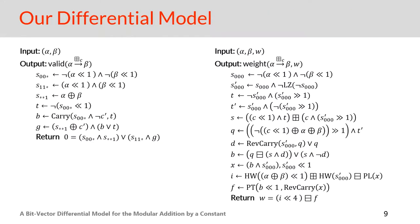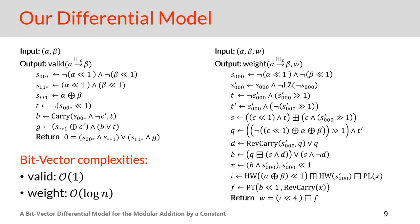This is the bit-vector differential model of constant addition that we obtained. The differential model of constant addition has more constraints than two-input addition. The validity part is quite simple: it only uses basic operators and a single carry function, so its bit-vector complexity is O(1). The weight part is more complex. It uses O(log n) bit-vector operators such as Hamming weight, leading zeros, reverse, and two new O(log n) bit-vector operators called PL and PD, alongside many basic operators. So the bit-vector complexity of this part is O(log n).